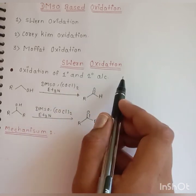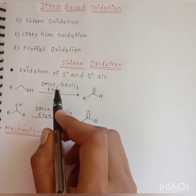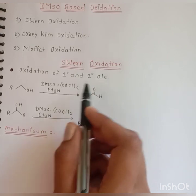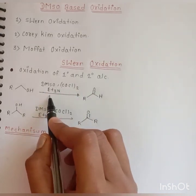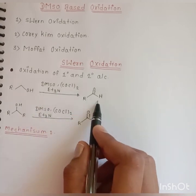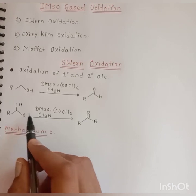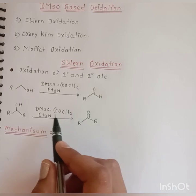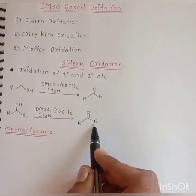When primary alcohols are treated with the Swern oxidation condition, that is DMSO, oxalyl chloride, and triethylamine, it gives aldehyde. When secondary alcohols are treated with DMSO, oxalyl chloride, and the base triethylamine, it gives ketone.